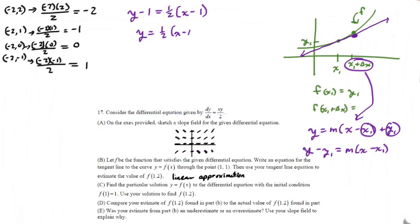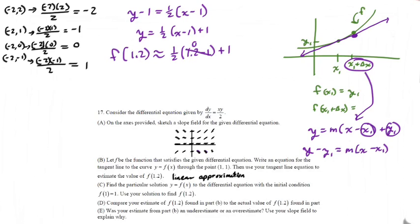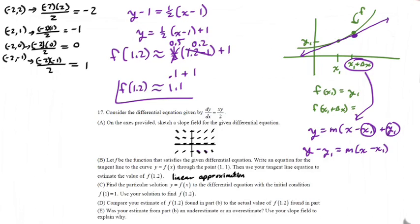The tangent line is: Y equals 1 half times (X minus 1) plus 1. To approximate F(1.2), I plug 1.2 into this: 1 half times (1.2 minus 1) plus 1. That's 1 half times 0.2, which is 0.5 times 0.2 = 0.1, plus 1, which approximately equals 1.1. That Y value is approximately equal to 1.1, and that's your answer for Part B.